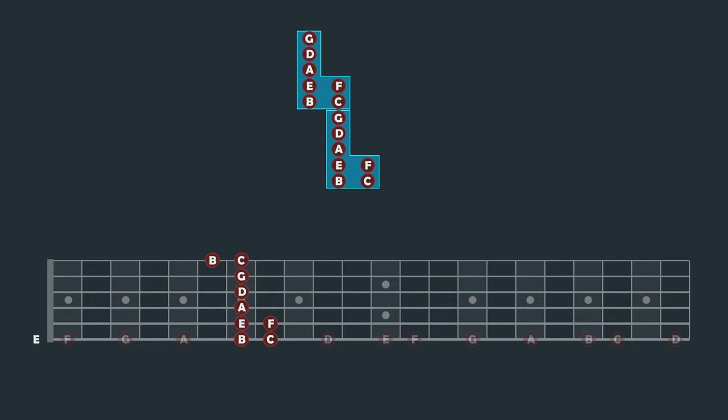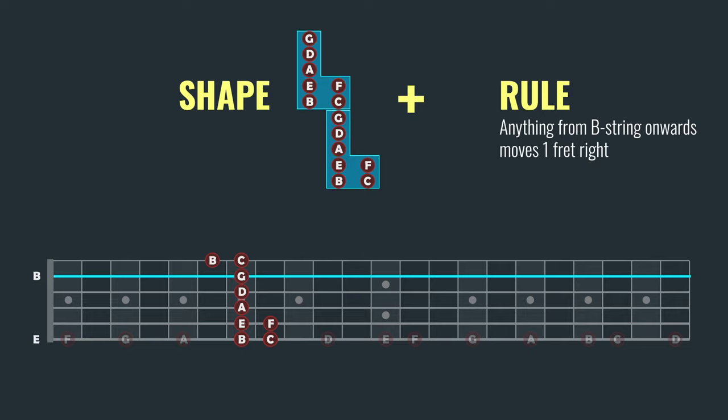Now before I go any further, if you recall at the start, I said there were two parts to this technique. A shape and a rule. Well the rule is that anything that crosses the B string gets shifted one fret to the right. This is a well-known quirk of the way guitars are tuned. It's a pain, but that's just the way it is. So this G and everything after it gets shifted one fret, like this.